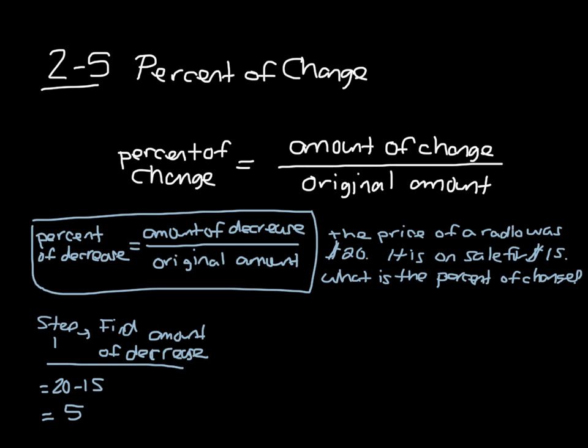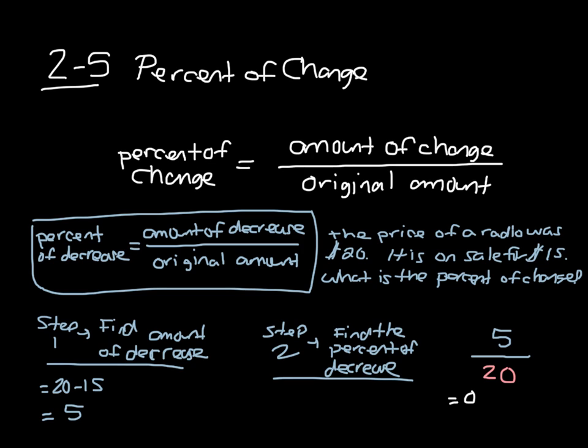And then step 2 is to find the percent of decrease. We can take our amount of decrease, which is 5, and divide it by our original amount. Now make sure you pick the right number. It was originally $20. And now 5 divided by 20 gets us a decimal 0.25, which is 25% decrease.